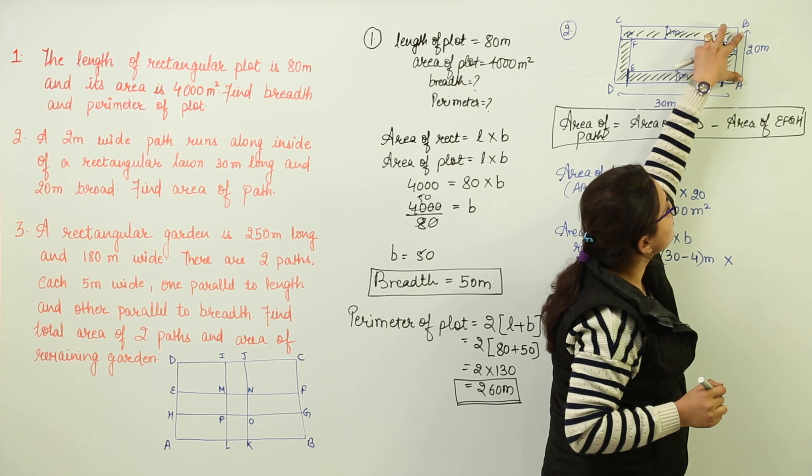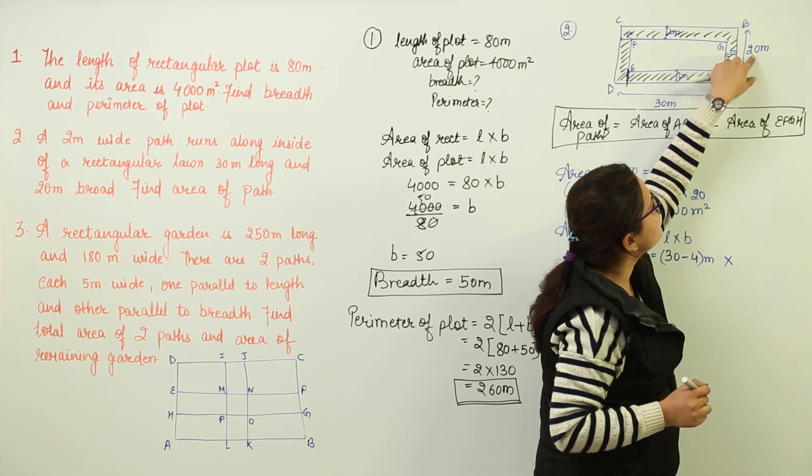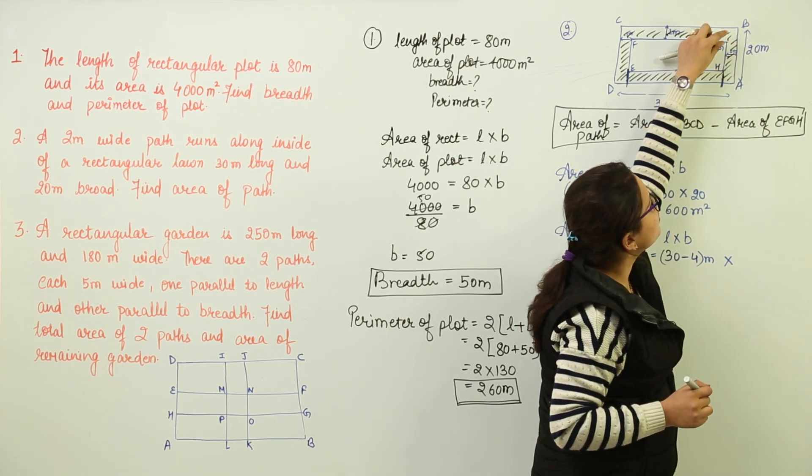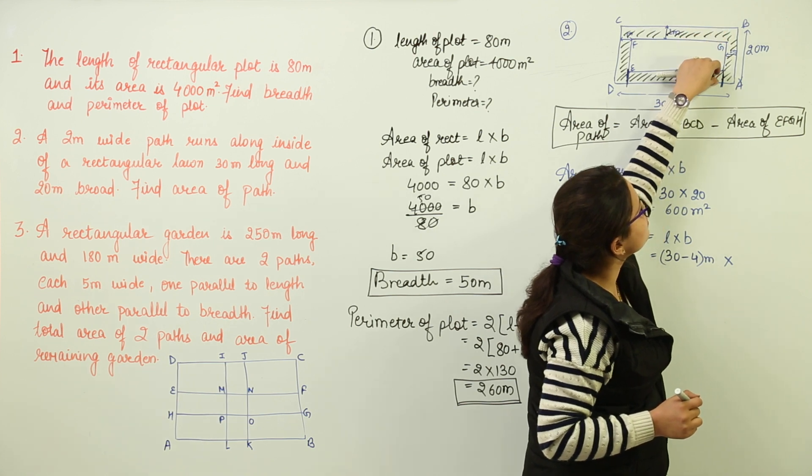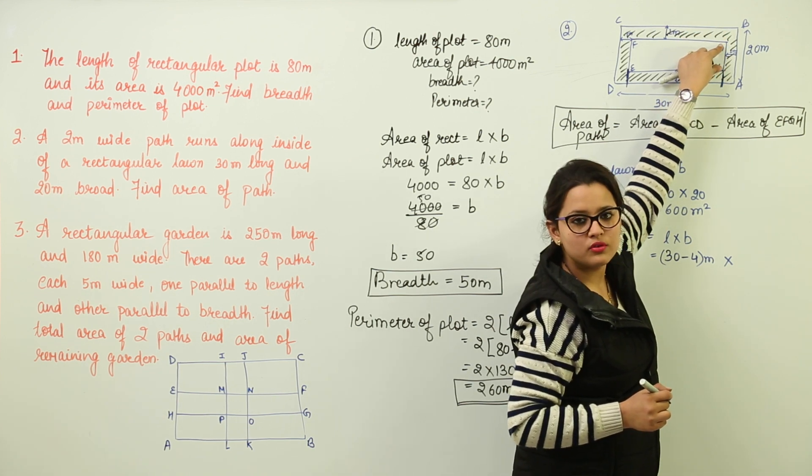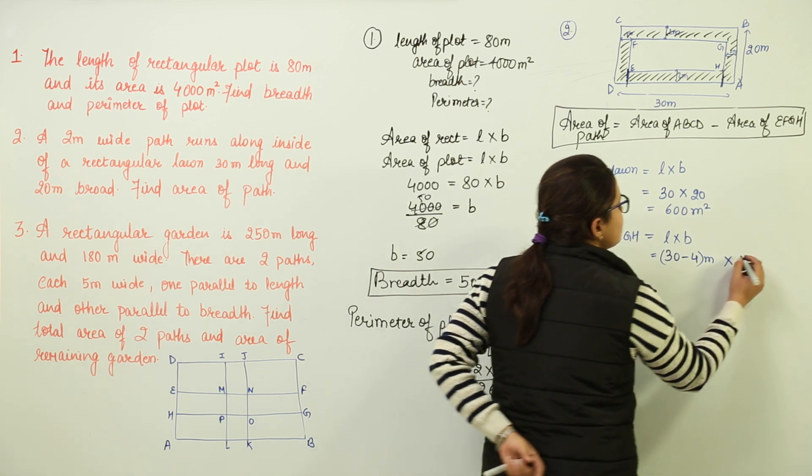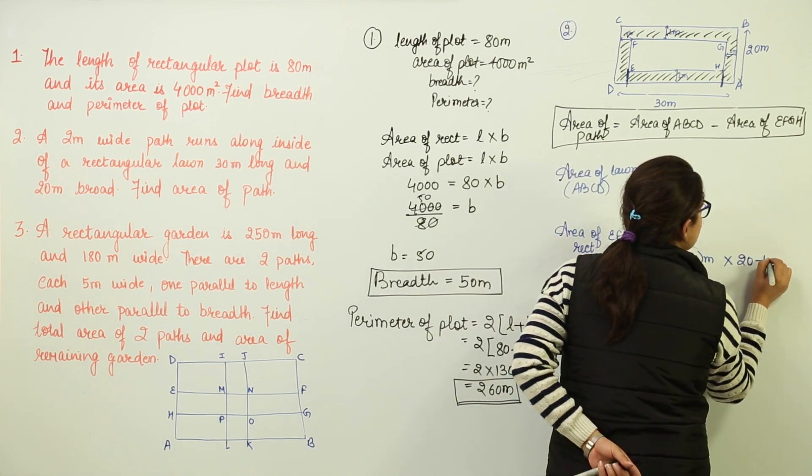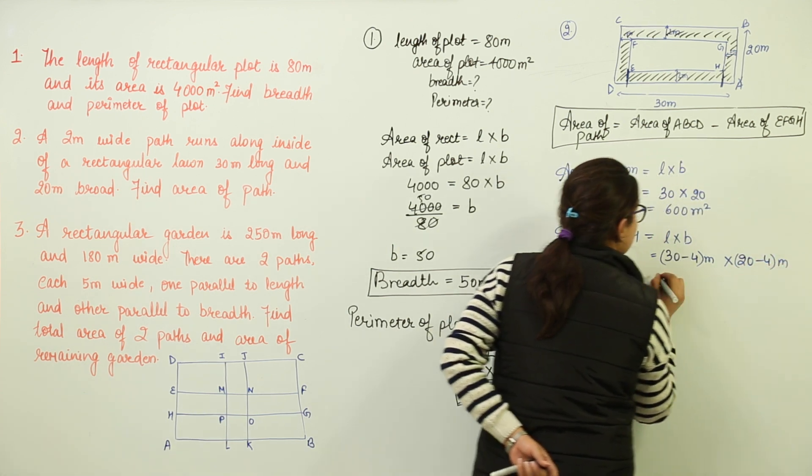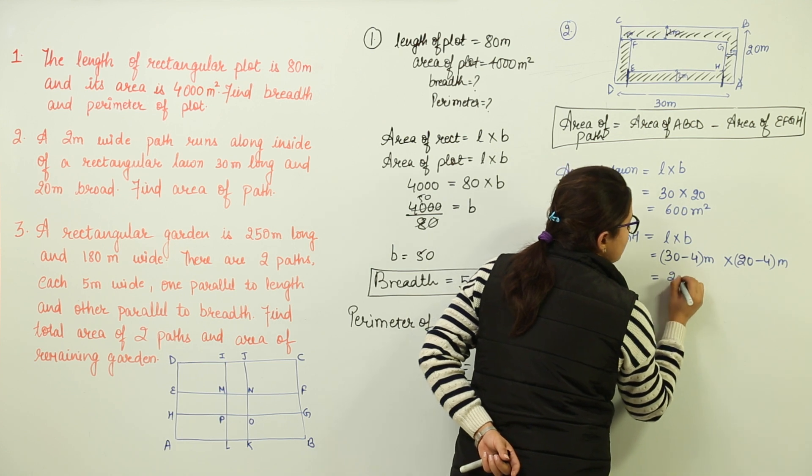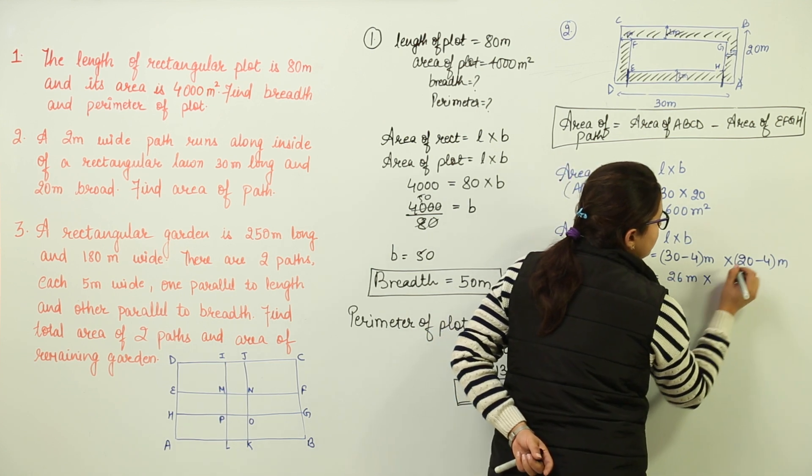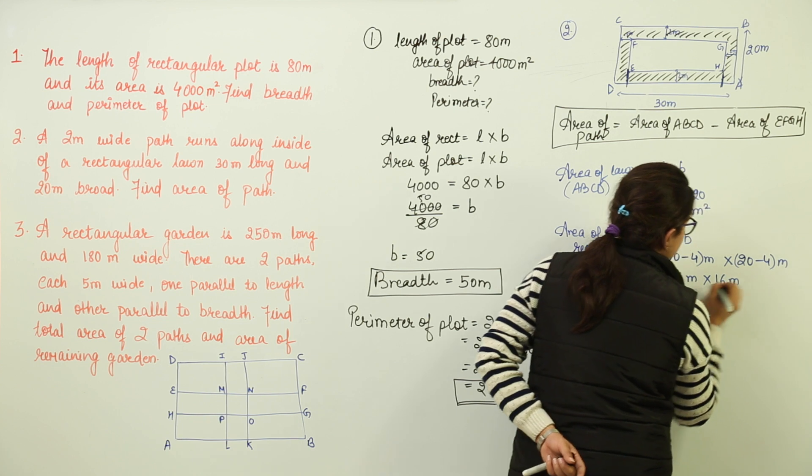The breadth total of the lawn was 20 meters. Out of that total, we are going to subtract this 2 and this 2 to get us the breadth of the lower one. So we write over here 20 minus 4 meters and here we have 30 minus 4 as 26 meters and 20 minus 4 as 16 meters.